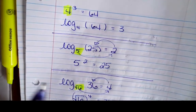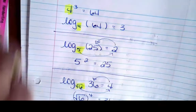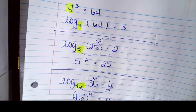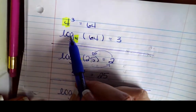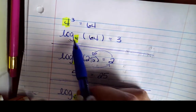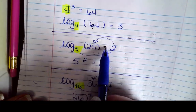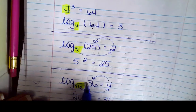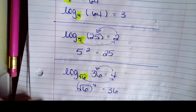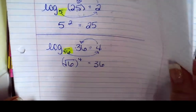So now let's back up for just a second and read these. The way that we read these — because I can say 4 to the third is 64 — but since logarithms are theoretically new, the way I would read this is: log base 4 of 64 is 3. Log base 5 of 25 is 2. Log base √6 of 36 is 4. So those are just ways that I'm going to read it back and forth.